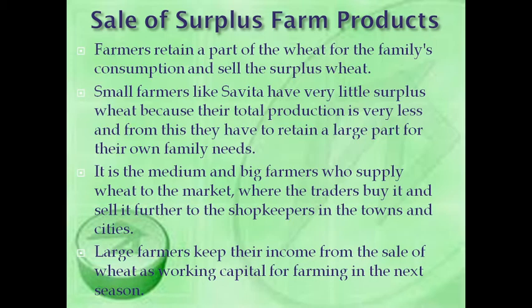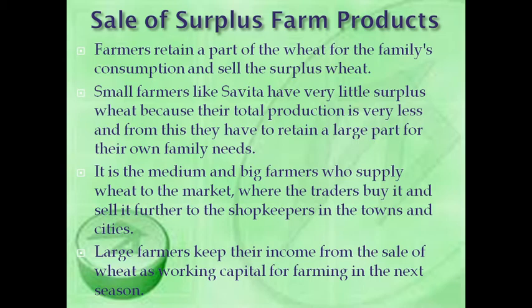Sale of surplus farm products: farmers retain a part of the wheat for the family's consumption and sell the surplus wheat. Surplus is something extra — for example, if 100 kg is grown and 50 kg is used for the year, the farmer can sell the remaining 50 kg. Small farmers have very little surplus wheat because their total production is very less and they retain a large part for their own family needs. It is the medium and big farmer who supplies wheat to market, where traders buy it and sell it further to shopkeepers in towns and cities. Large farmers keep their income from sale of wheat as working capital for the next season.